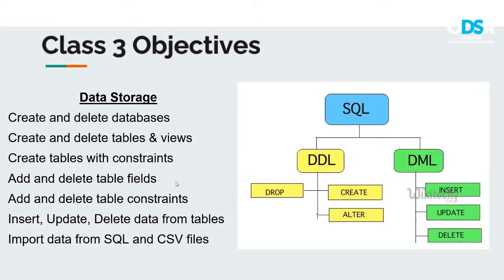The database container holds not only tables and data but user permissions and various data structures. A view within a database is like a saved piece of SQL code — you can save a view as a snapshot into a table. You write a query, create a view that saves that SQL code, and refer to it almost like it's a table. It's a reusable piece of code that gives you a snapshot into a database table.